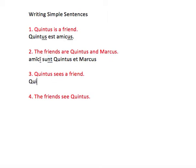Same thing here. We've got Quintus, and he sees a friend. So because it's just Quintus, we're going to say videt. Down here, it's the friends. And because they're plural, we're going to say, not videt — we're going to say vident.